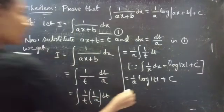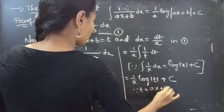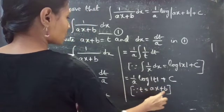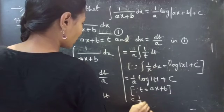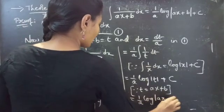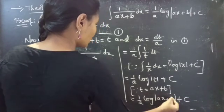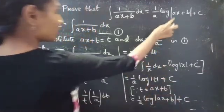Since we know that t equals to ax plus b, if you replace t by ax plus b then you will get 1 by a into log mod ax plus b plus integral constant c, which is our RHS.